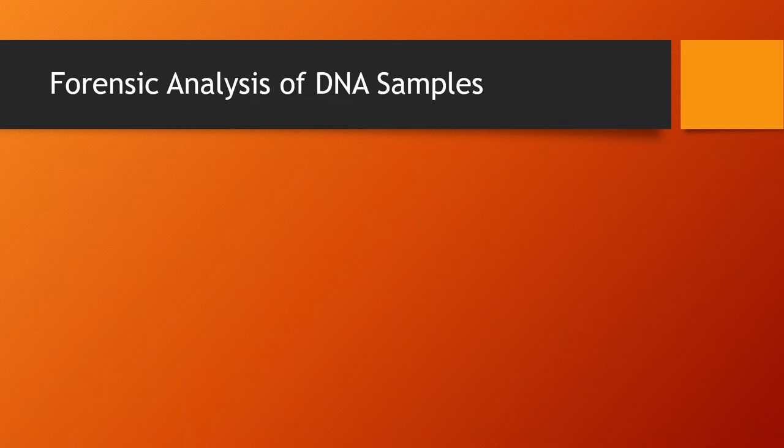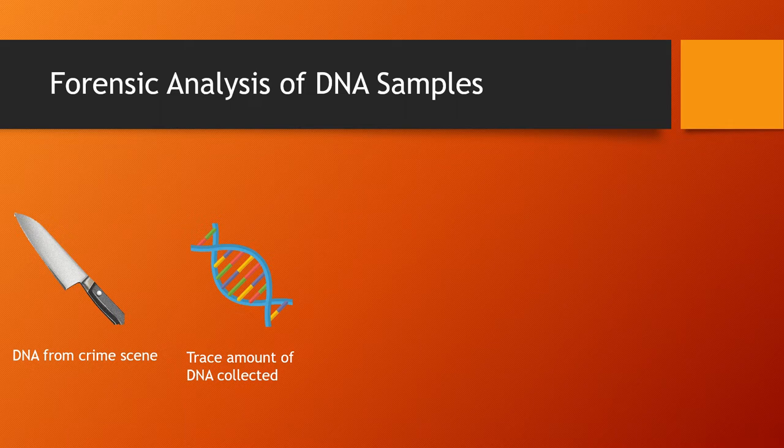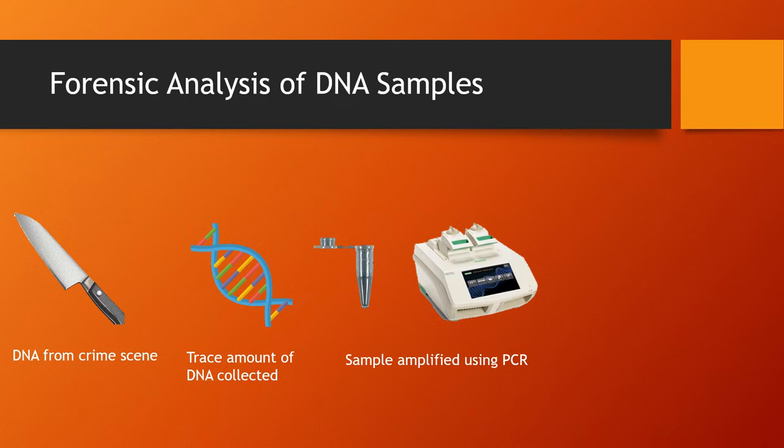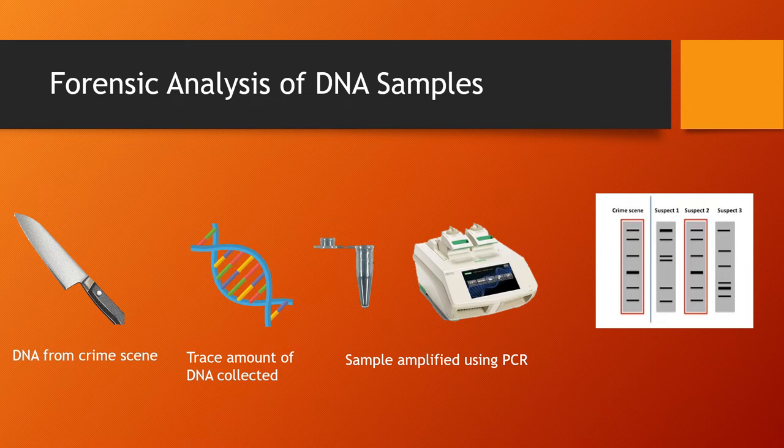A common example of this could be in crime investigation. In this case, a trace amount of DNA could be found on an item from a crime scene, but this sample would be too small for scientists to analyze. So this trace DNA would be prepared and put through a polymerase chain reaction, resulting in an abundance of identical DNA that is much easier to analyze and, hopefully, to match to a suspect.